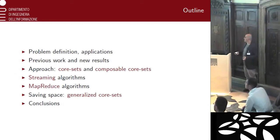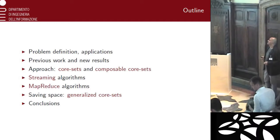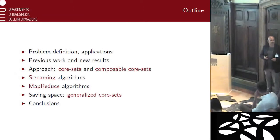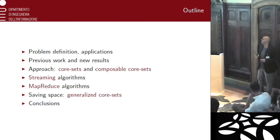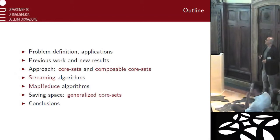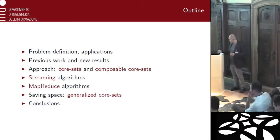Let me give you a very brief outline of the talk. We are defining the problem and talking about applications, and quickly give you an overview of previous work and our new results. Then I will concentrate on the central approach to our work, which is basically coming up with algorithms for diversity maximization problems in two computational scenarios suitable for big data processing: the streaming scenario and the MapReduce scenario. The central approach for both scenarios will be core sets and composable core sets. And finally, some more technical stuff on how to save extra space, and a few conclusions for future work.